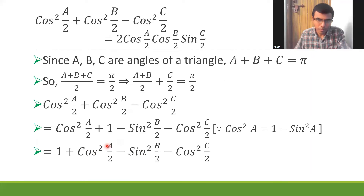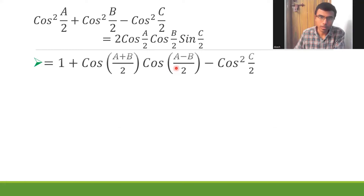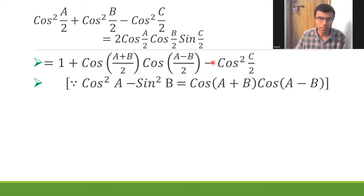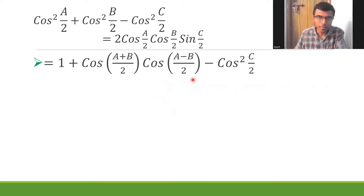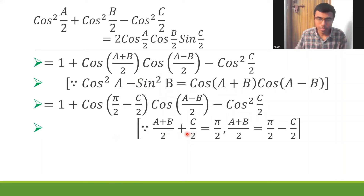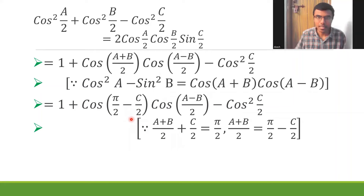Now, what is (a + b)/2? From our condition, (a + b)/2 + c/2 = π/2, so (a + b)/2 = π/2 - c/2. Always remember to mention the condition — it carries marks and makes a good impression on the examiner. So cos((a+b)/2) = cos(π/2 - c/2) = sin(c/2).